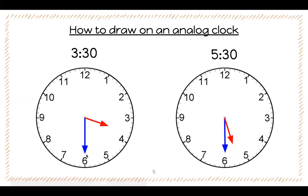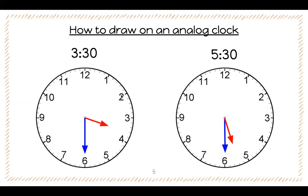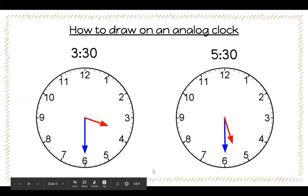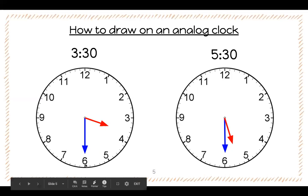The blue hand is pointing at the six, all the way at the bottom. Each one of these numbers counts for five minutes — so 5, 10, 15, 20, 25, 30. Or you can count the individual small lines. So our hour hand is between the three and the four, so it's 3:30. It will only be four once it has gotten to four or passes four just a little bit — that's what's tricky about it.